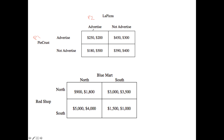Let's assume that LaPizza is definitely going to advertise. What you want to do is ignore the right-hand side of the matrix — just cover it over — and only look at the numbers on the left-hand side. Player one is faced with two potential payoffs: a payoff of $250 if they advertise, or a payoff of $180. Since $180 is less than $250, if LaPizza were to advertise, PieCrust would advertise as well.